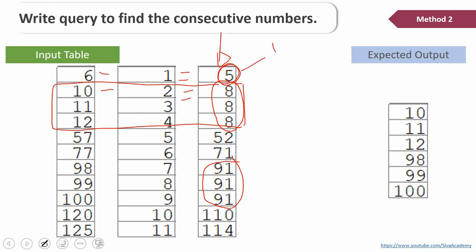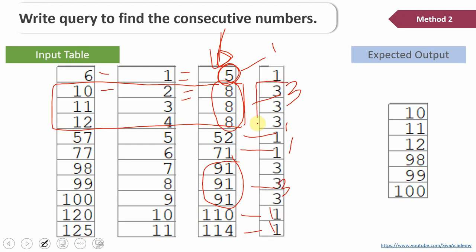So the count for the group with value 5 will return 1. Similarly, counting how many 8s exist in the group will return 3. Similarly, the count for 52 will be 1, for 72 will be 1, for 91 will be 3, for 110 will be 1, and for 140 will be 1. If you see, there is one clear pattern: anything with a count greater than one represents the sequence numbers. So the actual output will show counts of 3 here and 3 here — we can just filter for count greater than one, which will return 10, 11, 12 as well as 98, 99, and 100.